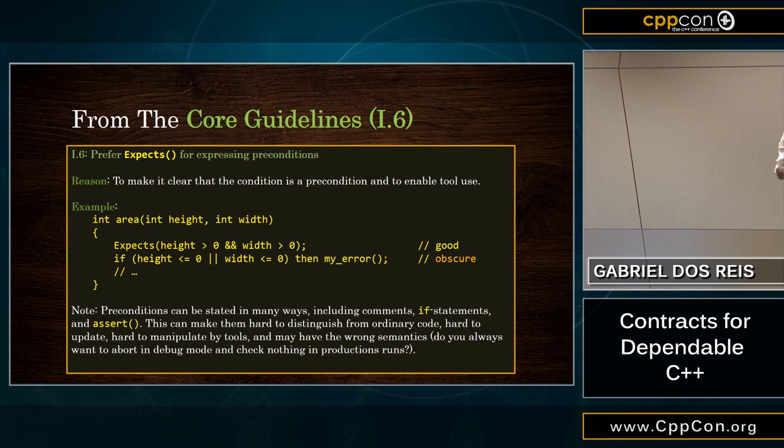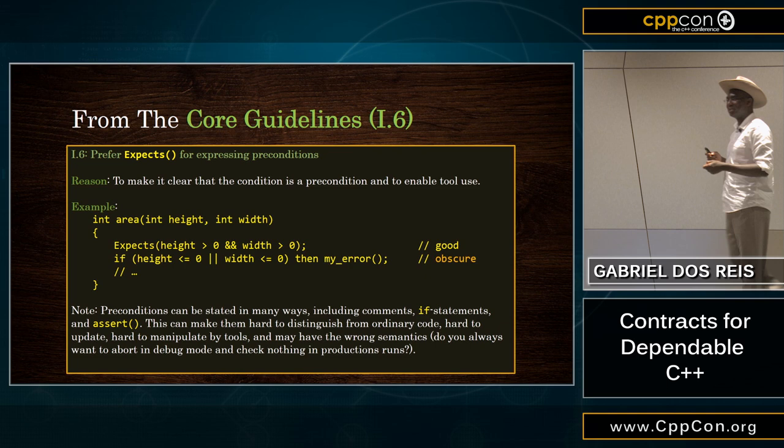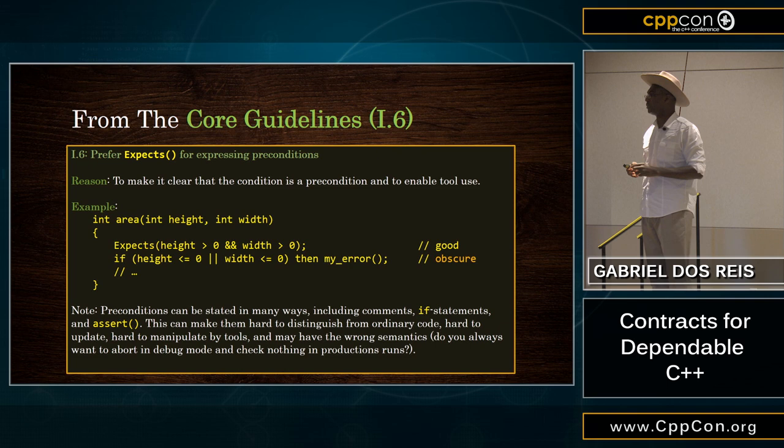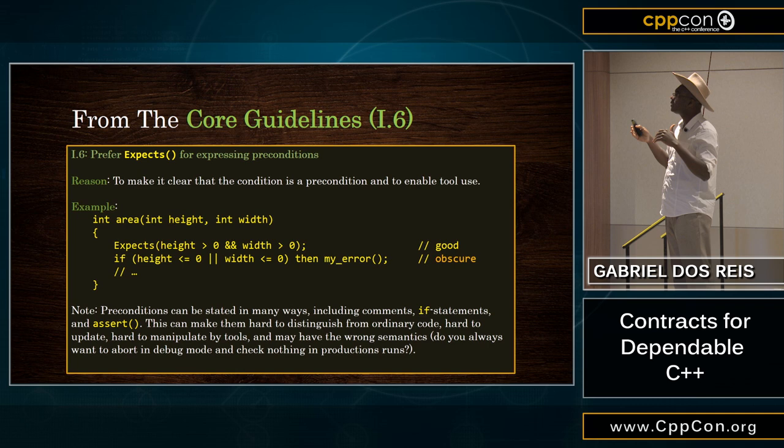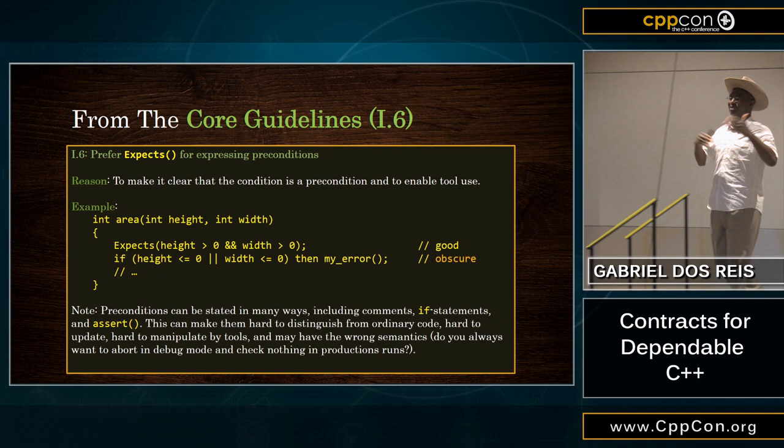You can only have the expect macro for now in your function. Here's an example: if you want to compute the area of a rectangle, we assume a rectangle has positive height and width. So you say: I expect the height and the width to be positive — as opposed to: if it is non-positive, or if the other side is also non-positive, then execute my error. That's just too long and doesn't say directly what you want in code.